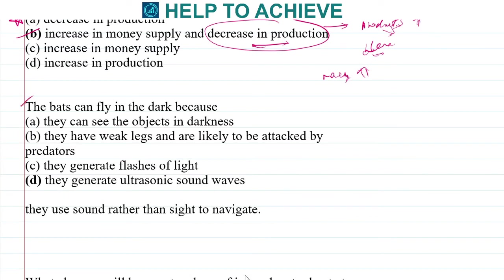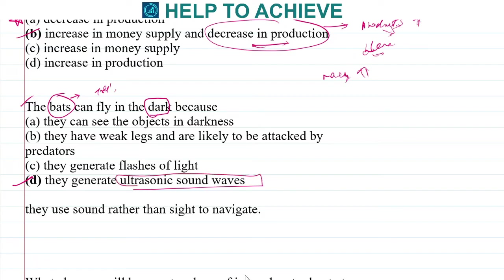Next: bats can fly in the dark. We know bats fly at nighttime. This is because they generate ultrasonic sound waves. Bats use sound rather than light to navigate. So the correct answer is that they generate ultrasonic waves, which allows them to fly in the night.